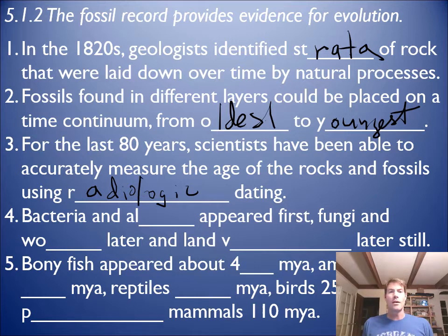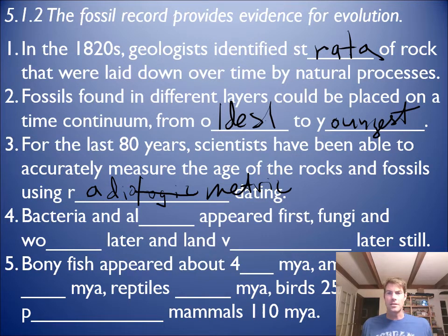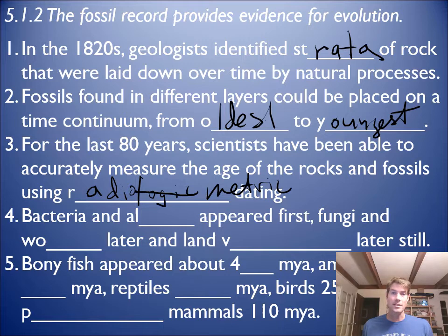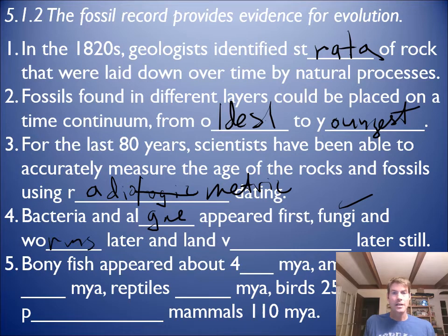Certain elements in rock when it's formed break down over time into different isotopes. Those isotopes can be measured and scientists can date how long the rock has been around. Carbon dating is good for about 5,000 years, but radiometric dating can go back millions and millions of years — very effective. What we find is bacteria and algae appear first, then fungi, then worms, then land vertebrates. Fish appear about 420 million years ago.